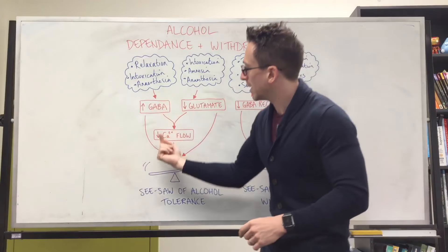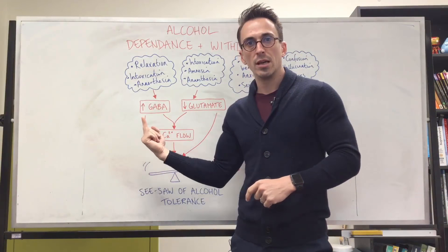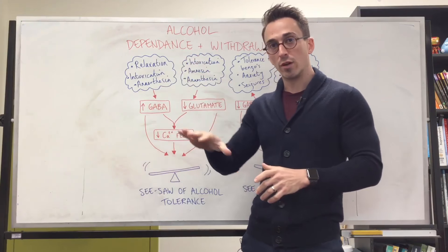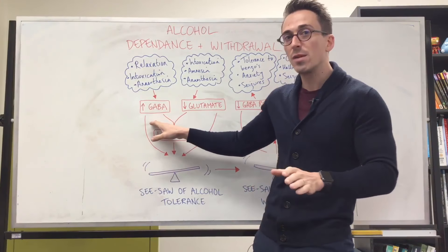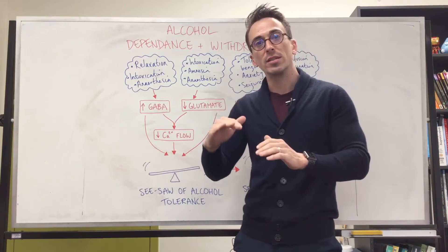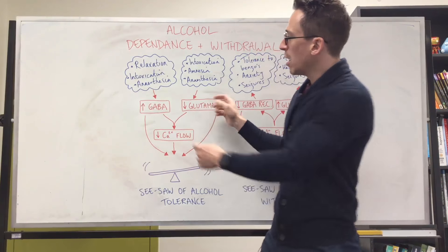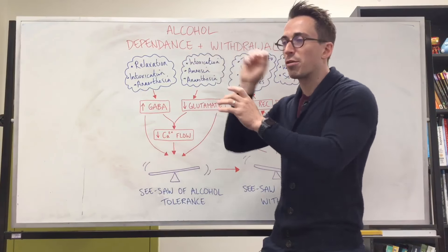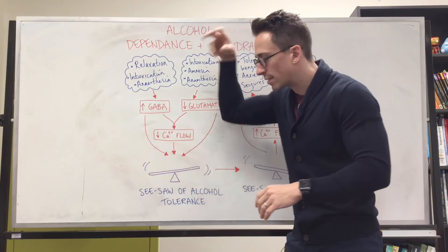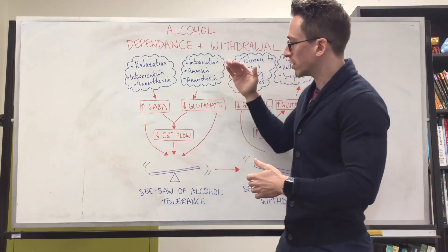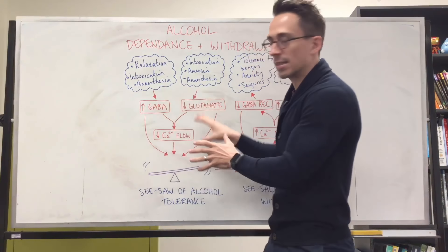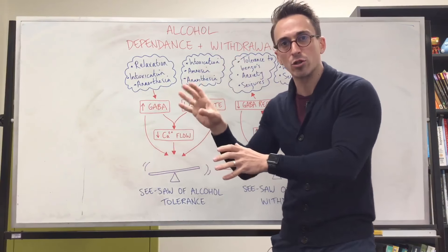What alcohol does in the body is it increases GABA neurotransmitters — that stops neurons from firing off — and inhibits glutamate neurotransmitters, which also tells them to stop firing off. So we get an overall inhibitory effect, not a stimulatory one. That's why alcohol is a depressant, not a stimulant. Because these neurotransmitters affect whether calcium flows into neurons, and alcohol is a depressant, it decreases the flow of calcium into neurons. All of this makes sense in regards to it being inhibitory.